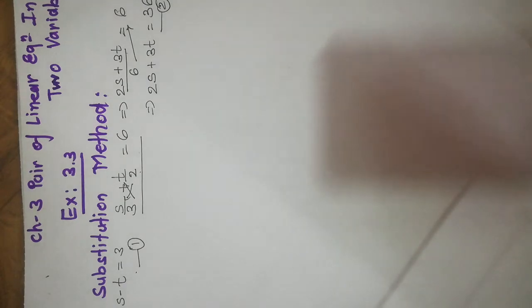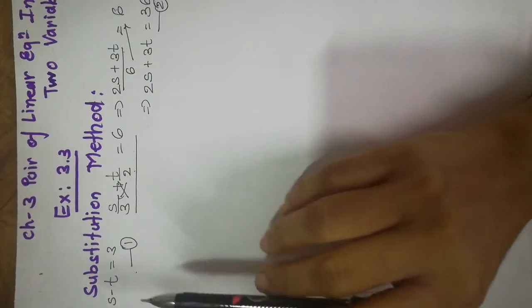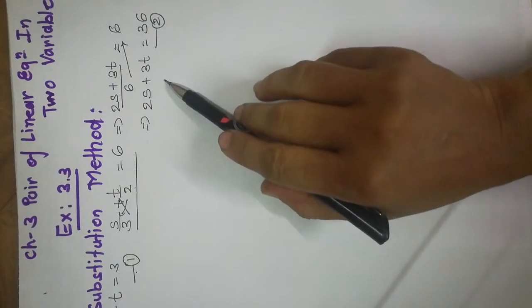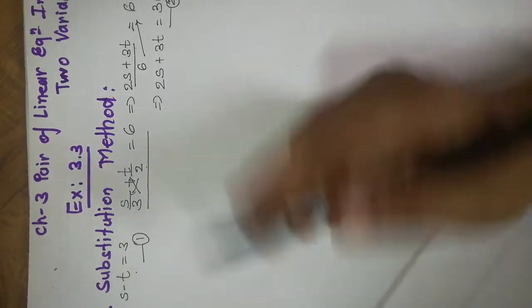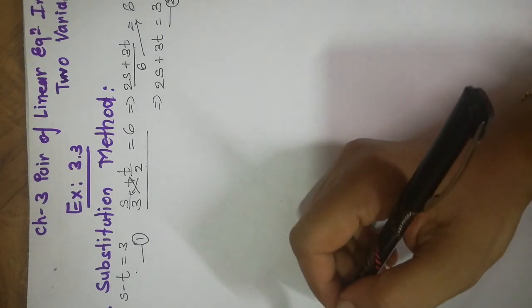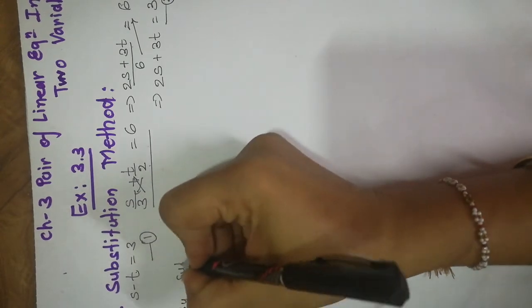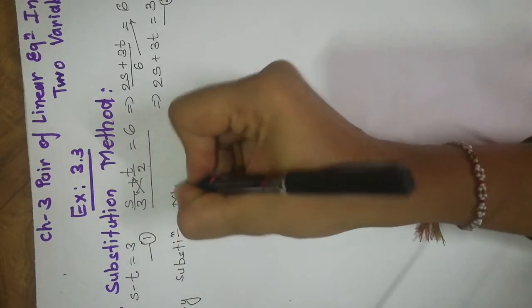Now solve by substitution method. As per my previous video you can see how we solve step by step. In this video I show you how to solve it. First of all, from any equation you can find the value of one variable, and then put that value into the remaining equation to get the value of the other variable. Let's start — by substitution method, from equation 1.